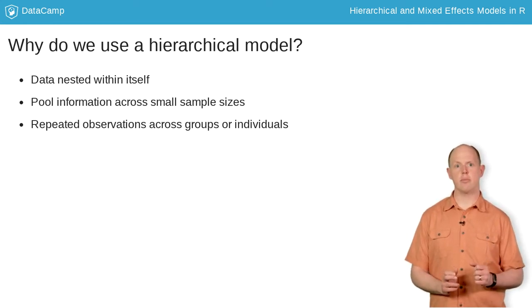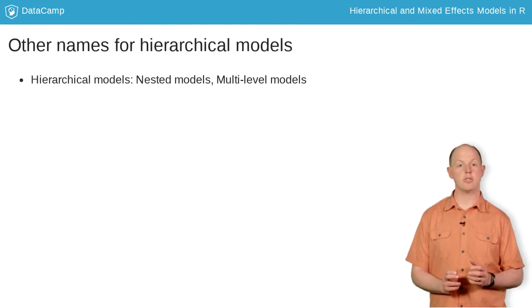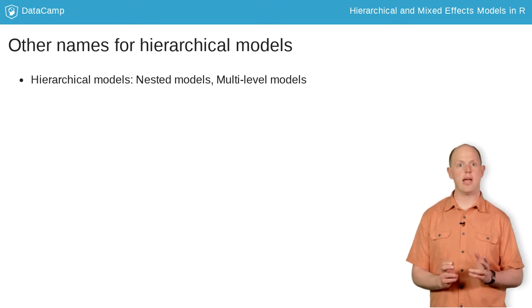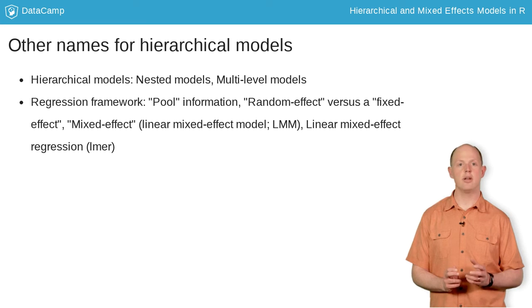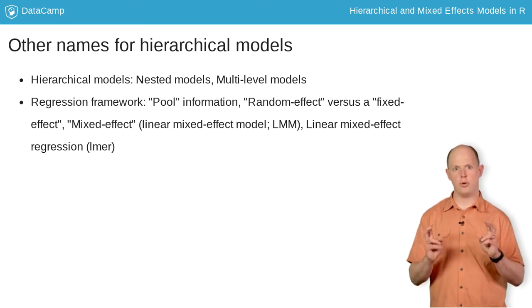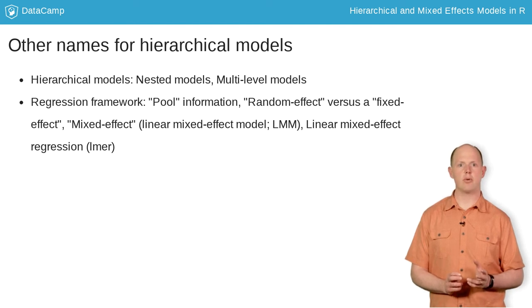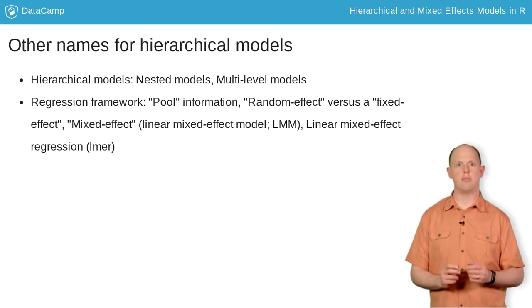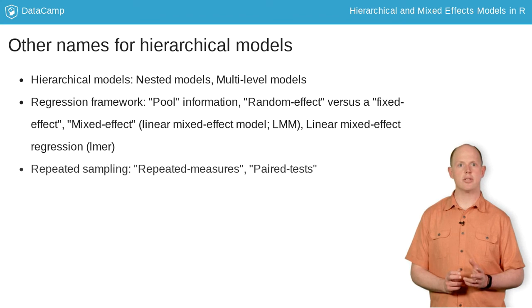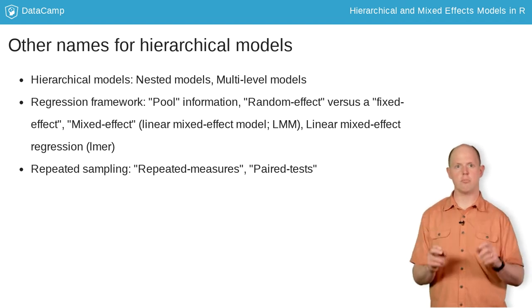In fact, all three of the problems I just described occur somewhat often in statistics. These models go by different names: nested models, like the classrooms nested within schools in our example; hierarchical models, because the data has a hierarchy; and multi-level models, because we have two or more levels of interest. Also, in a regression framework, the multi-level covariate can sometimes be called a random effect that pools information across groups. A model with both a fixed effect, such as the standard linear regression, and a random effect is called a mixed effect model. Last, some models can account for resampling the same individuals or groups over time — these models are called repeated measures or paired tests.